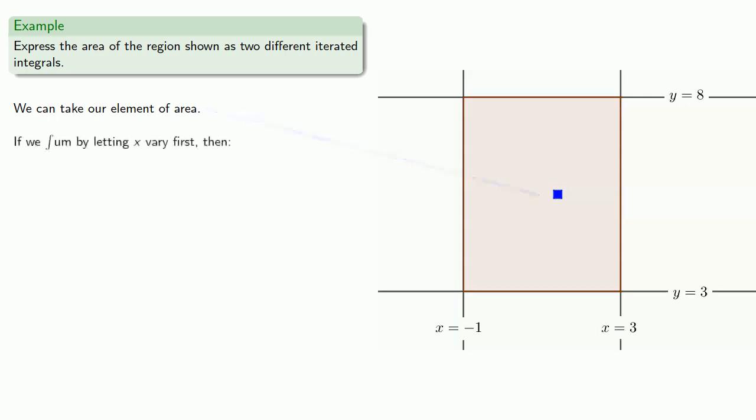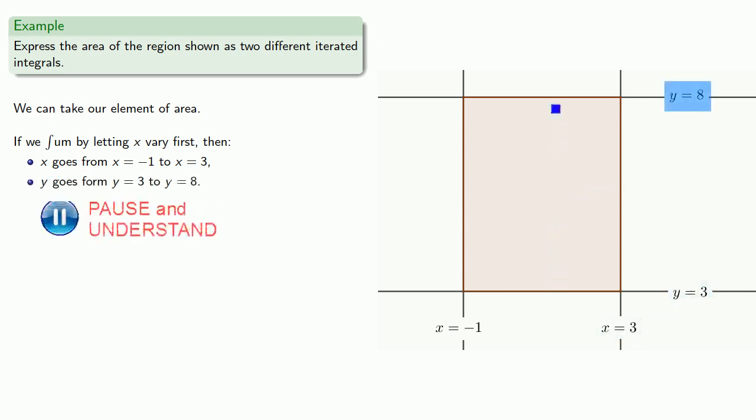Now if we sum by letting x vary first, moving horizontally, then we see that x goes from x equals negative 1 to x equals 3, and y goes from y equals 3 to y equals 8. And so we can write our integral. First we'll sum letting x vary from x equals negative 1 to x equals 3, and then we'll sum letting y vary from y equals 3 to y equals 8.